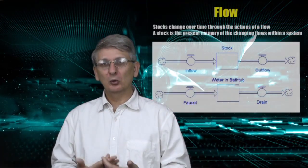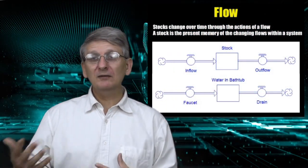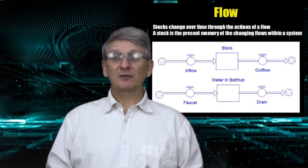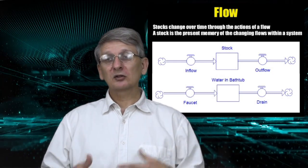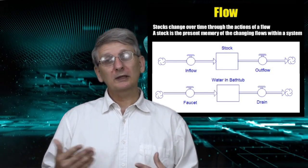Changes in stock over time is through the action of a flow within a system. For example, in a bathtub, we have an inflow from a faucet and an outflow from a drain. If the flow in is greater than the flow out, the stock will increase. If less, then the stock of water in the tub will decrease.